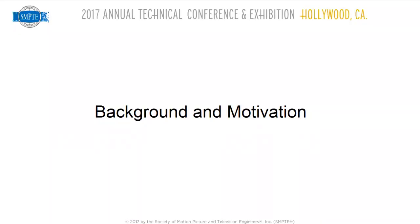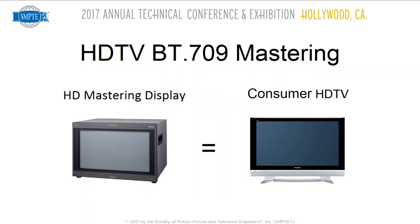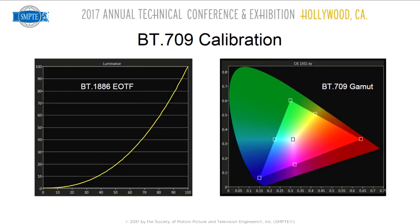First I want to get into a little bit of the background and motivation of why this is even needed. Mastering HD content is pretty simple. You have a display and the consumer display almost always can produce the same visual performance, and in most cases it has more performance than the HD mastering display. So when we calibrate an HDTV, we are essentially detuning it slightly so it follows the standards of the BT.1886 EOTF, Electro-Optical Transfer Function or Gamma Curve, D65, and the BT.709 Color Gamut.